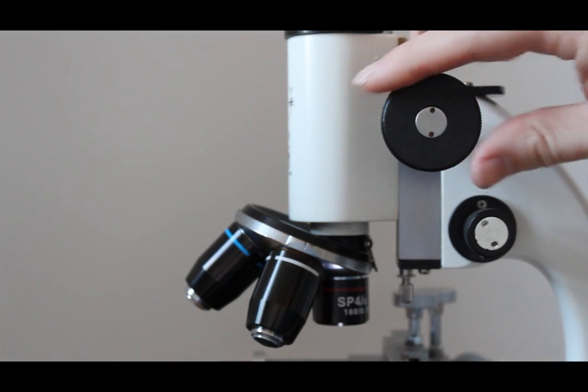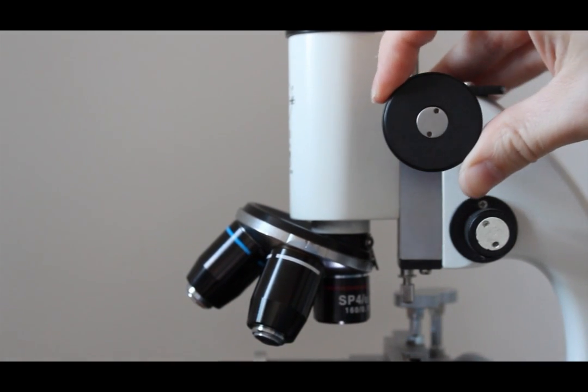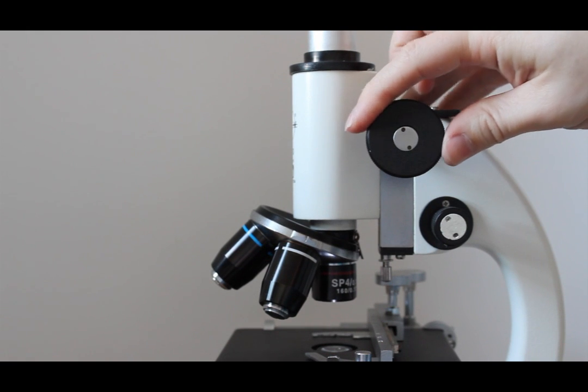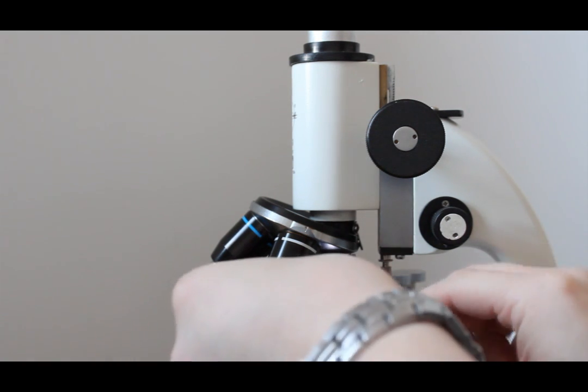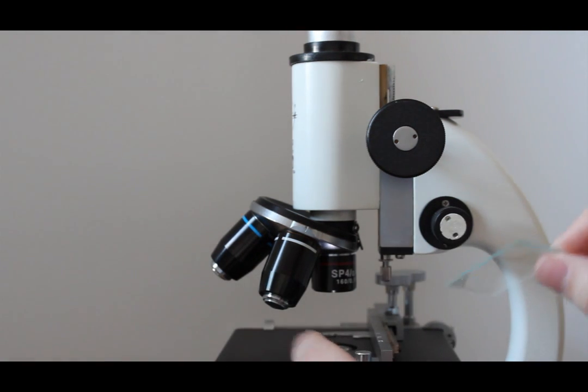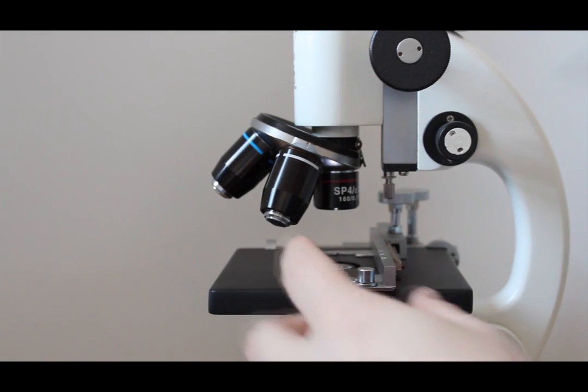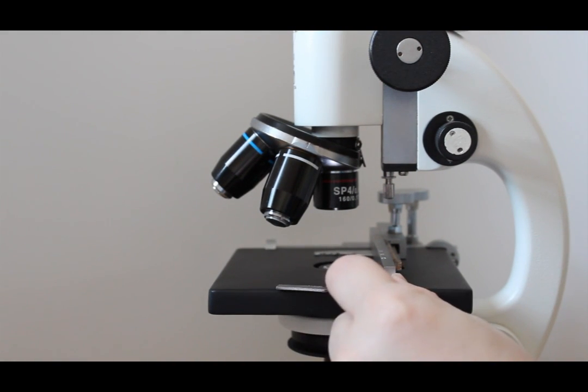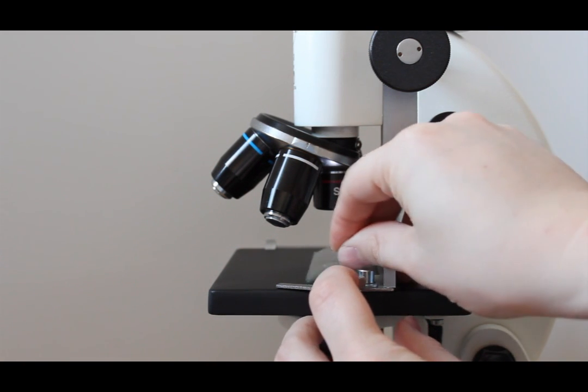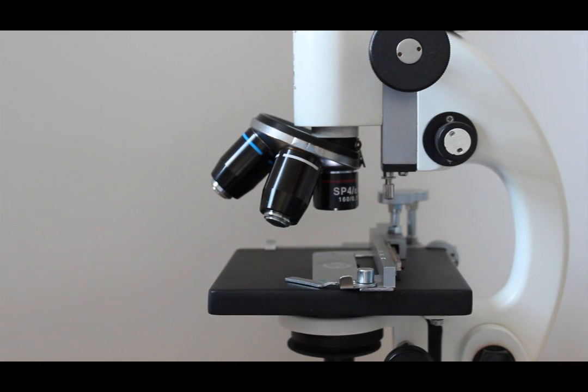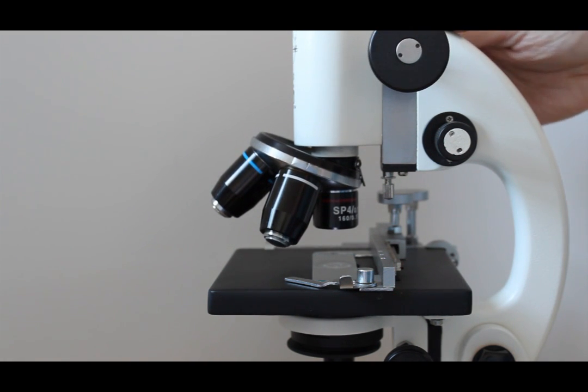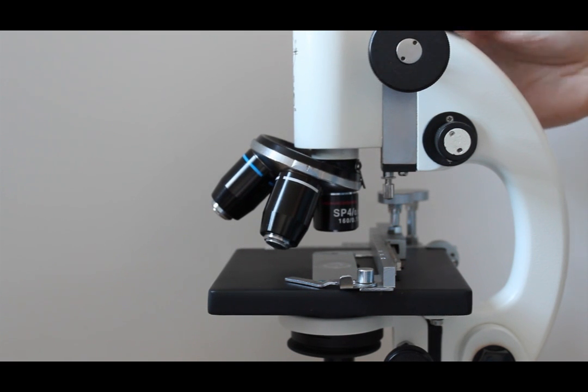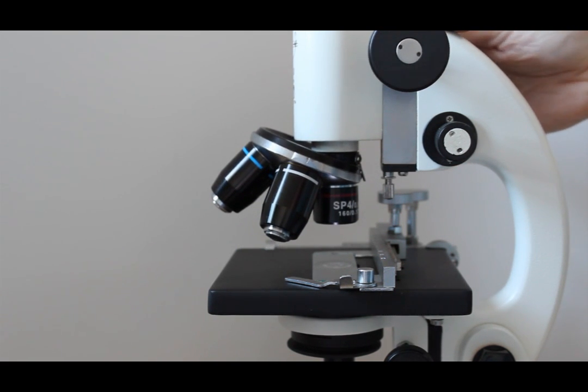The next thing we're going to look at is your course adjustment here. Course adjustment is basically when you first put that slide on. So you're going to put that glass in. And you're going to use your course adjustment to basically get a rough idea of where you want to be. As you can see it's moving quite nicely.